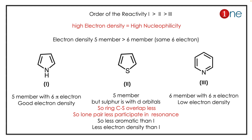The second compound is thiophene, which contains sulfur. The carbon–sulfur bond has low orbital overlap, making it less aromatic than pyrrole. This reduces aromaticity slightly, resulting in lower electron density than pyrrole, so thiophene is ranked second.